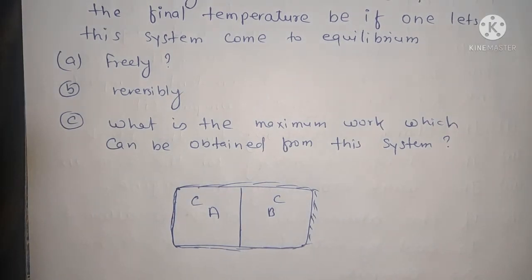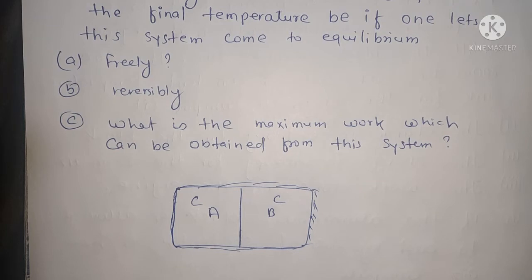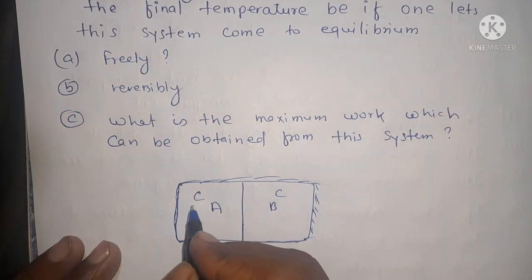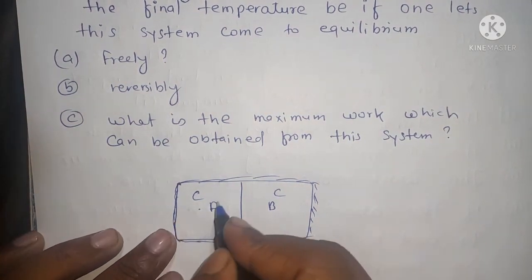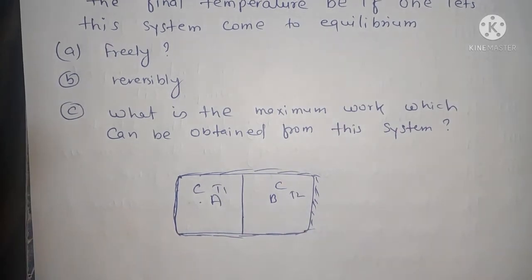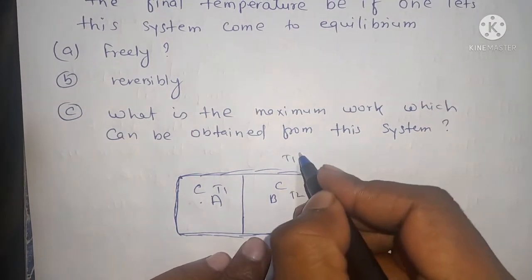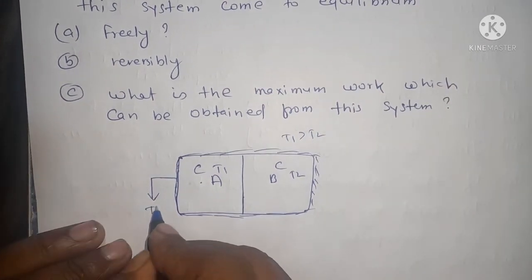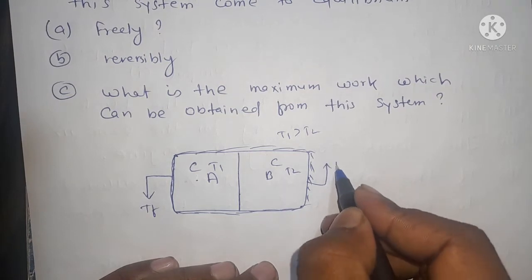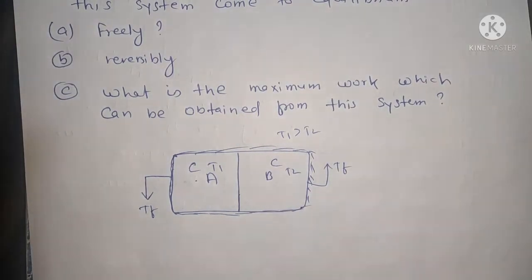This is the heat engine, which is the work-producing device applied. So this is the temperature, which is the final temperature Tf. Suppose block A has temperature T1, and the other body has temperature T2. As the process proceeds, T2 will decrease and Tf will increase.